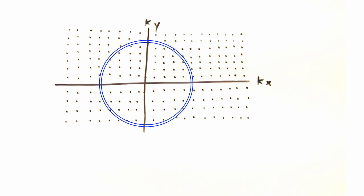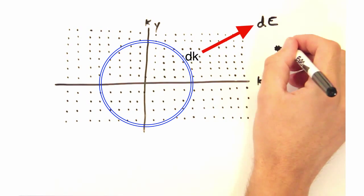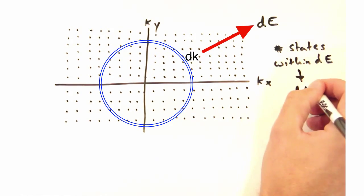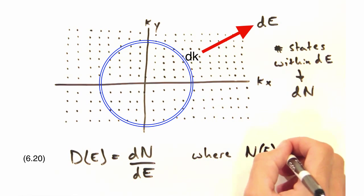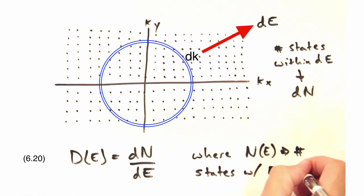Recall that we've already talked about the density of states when we talked about phonons and can think of it as the number of states within some dE. So if we know our number of states, all we do is just take the derivative with respect to energy.